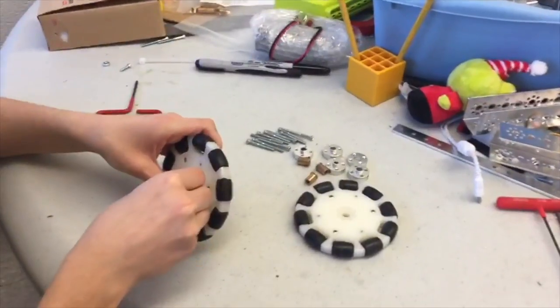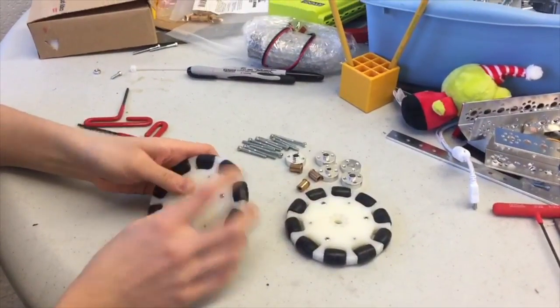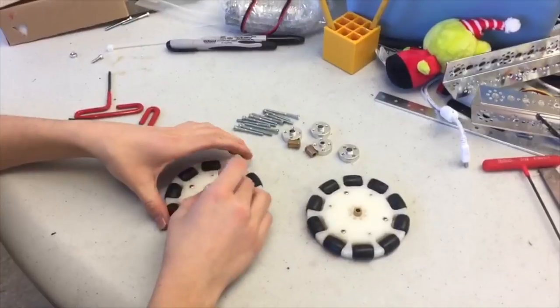First, take two bronze bushings and push one into each omni wheel.